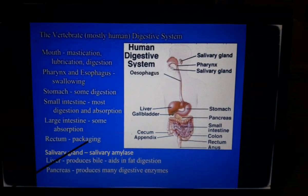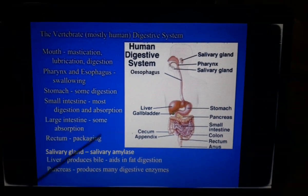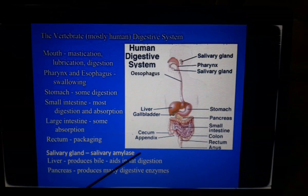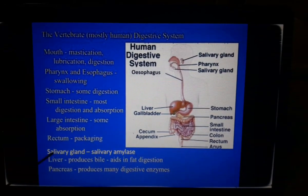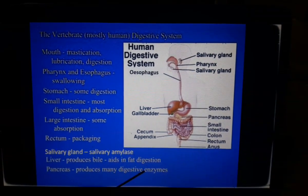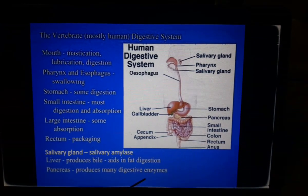Rectum does packaging. And then the glands like salivary glands secrete salivary amylase that helps in the partial digestion of starch. Then the liver produces bile, which helps in the digestion of fat. And then pancreas produces many digestive enzymes.